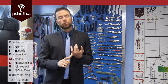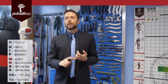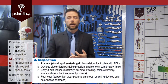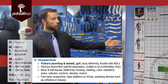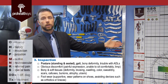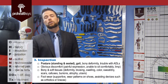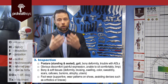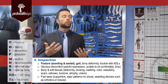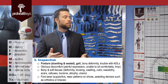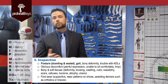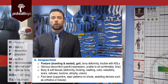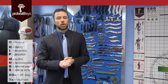So after observation and history, the next thing you do is inspection. Inspection includes things like postural evaluations and overall presentation of the patient. Are they well-groomed? Do they seem happy? Are they cognitive to the events happening around them today? All of these are parts of your inspection.